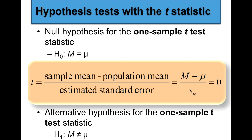For a one-sample t-test, two-tailed, the null hypothesis is: mean equals mu. You're saying that giving them medicine won't change their average score from the population mean. The alternative hypothesis would be that mean does not equal mu — for a one-sample t-test, two-tailed, meaning the mean could be higher or the mean could be lower.